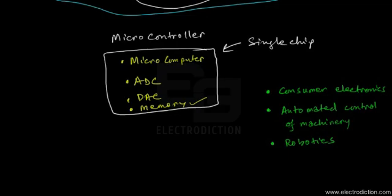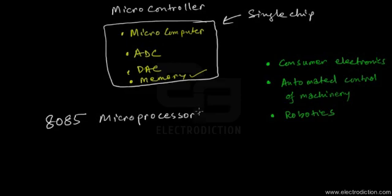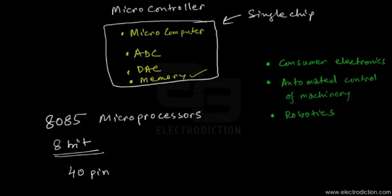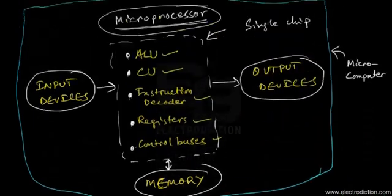In our journey ahead, we shall first delve into the details of the 8085 microprocessor — one of the standard types of microprocessors first created by Intel in the mid-1980s. It is an 8-bit microprocessor that comes as a 40-pin DIP chip. Here is a real-life picture of the 8085 microprocessor. We'll go into detail in the forthcoming tutorials. Thanks for watching — see you in the next tutorial.